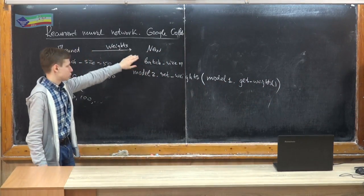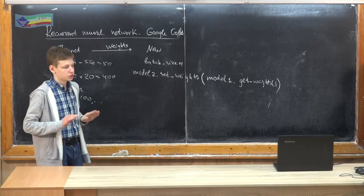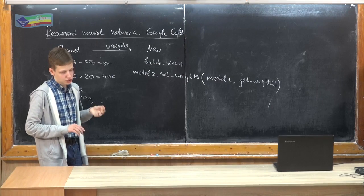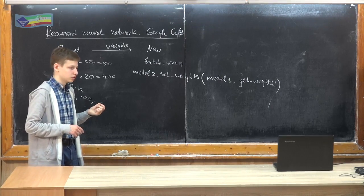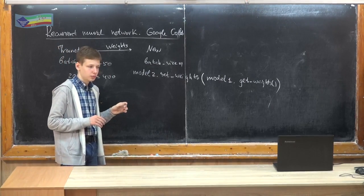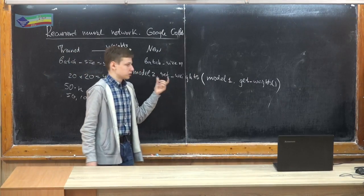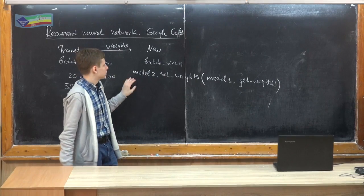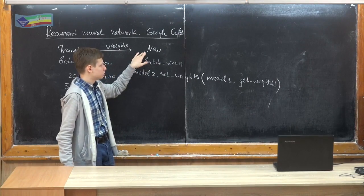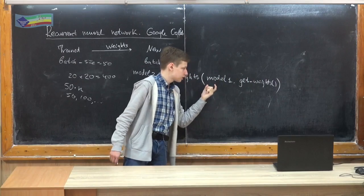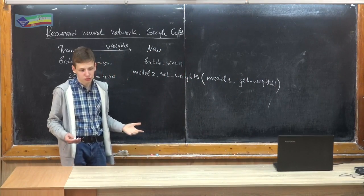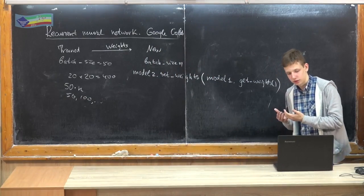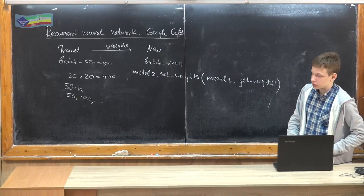Now we only need to get its weights. Because model2 is going to have the same structure, but we're only going to change batch size. Actually, you can change time steps too, but not input dimension. So you can take like 10 points or one point if you want. But you need to create a new one, get weights, then set weights and it works just like a normal neural network.